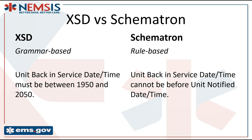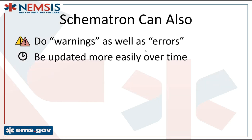In the NEMSIS standard, the XSD is set at the national level — one XSD for demographic data and one for patient care report data, used in every system from national down to local. Schematron is implemented at multiple levels. There is a national Schematron schema for demographic data and another for patient care report data, implemented at all levels. But there can also be state-level Schematron schemas, giving states the opportunity to enact additional validation rules enforced at the state and local level, but not at the national level.